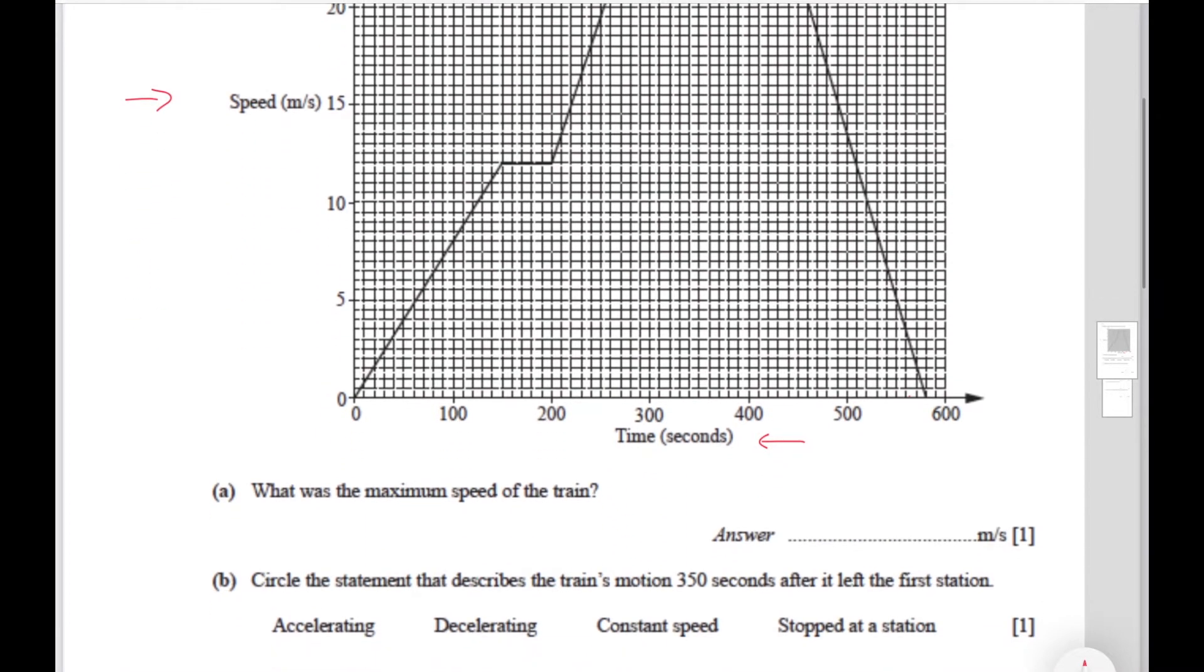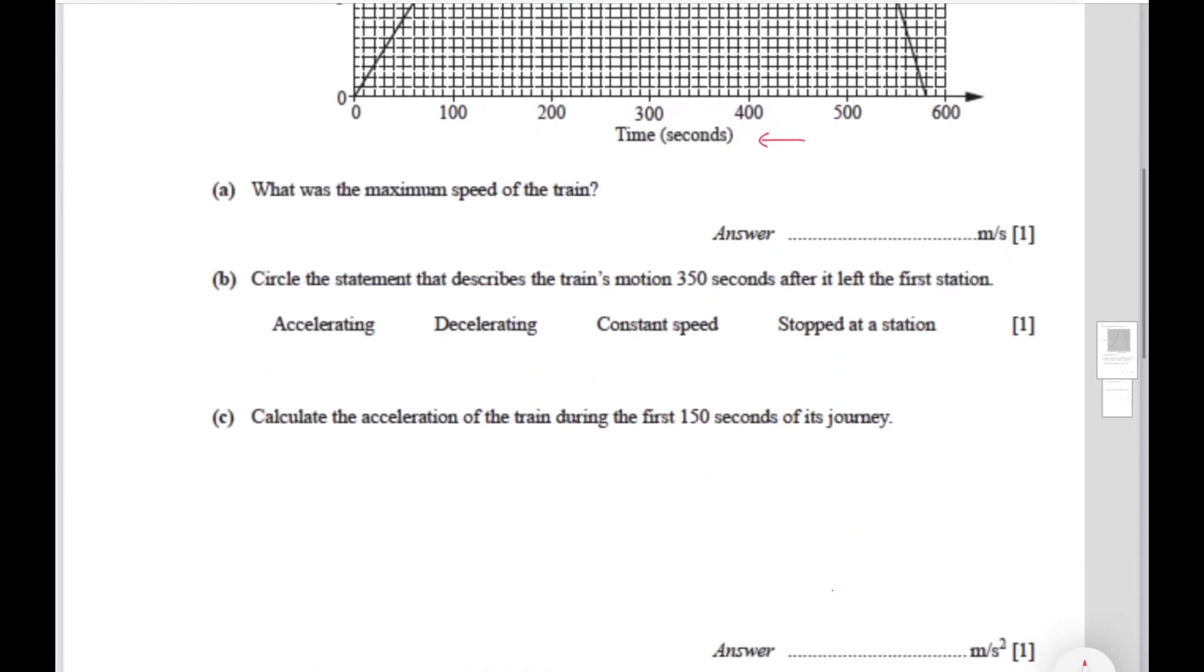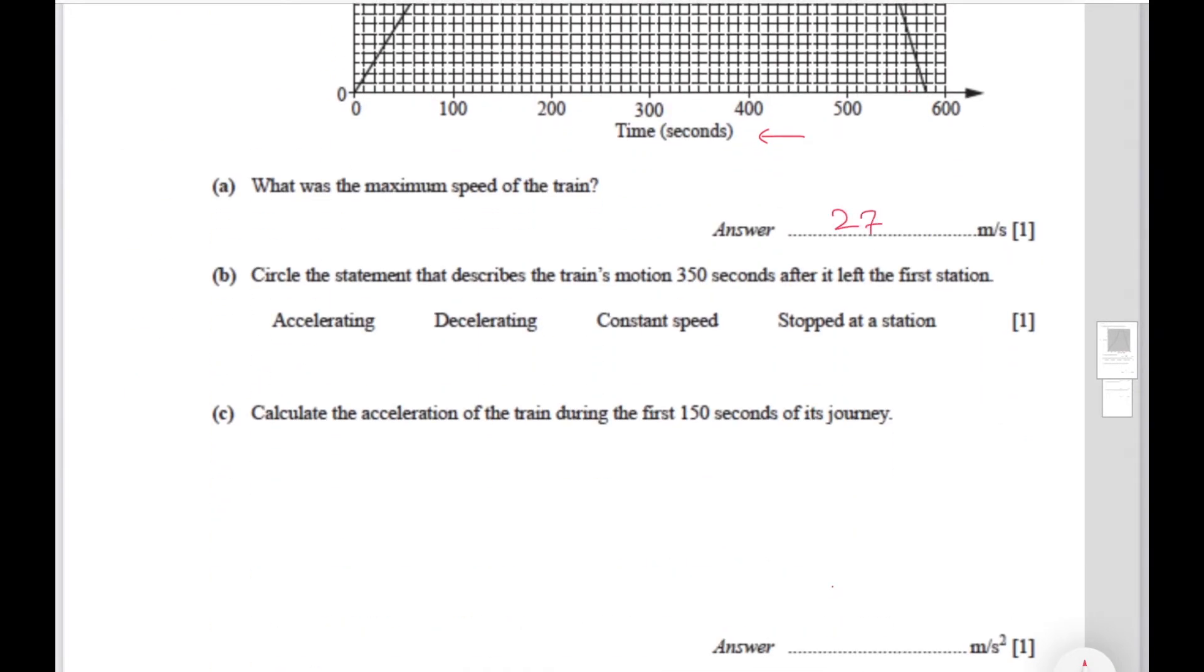The first part says what was the maximum speed of the train. That means the highest point, which is this, should be the maximum speed. So let's calculate what this is. This is 25, this is going to be 26, this is going to be 27. So the maximum speed was 27 meters per second.